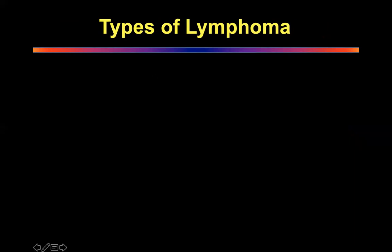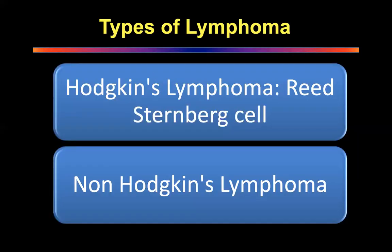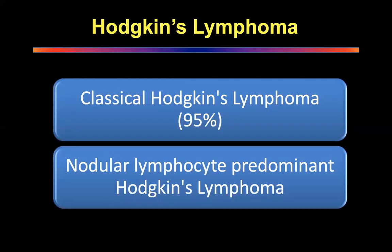Types of lymphomas: Hodgkin's and non-Hodgkin's. For Hodgkin's lymphoma, the pathognomonic cell is the Reed-Sternberg cell. Types include: nodular sclerosis — most common — followed by lymphocyte predominant, lymphocyte depletion, and mixed cellularity.